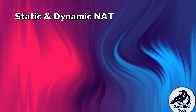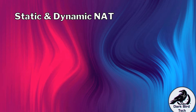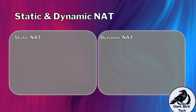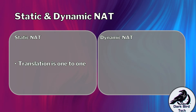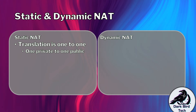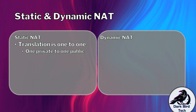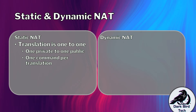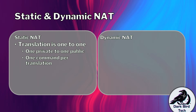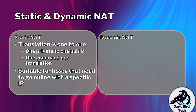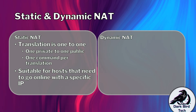The process we've just looked at very accurately describes two variations of NAT: static NAT and dynamic NAT. With static NAT, it's a one-to-one translation, which means one private IP address to one public IP address. When we say one-to-one, we also mean one command per translation. So if I've got two people to translate, it's two commands. But if I've got 100 or 1,000 people, it's 100 or 1,000 commands respectively. We generally use this when we have hosts that need to go online with specific IP addresses.